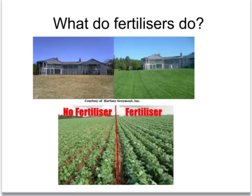You can see from these two pictures the effect of using fertilizer both on a lawn and also on these crops. The fertilizer makes the grass grow much greener and much lusher, and it makes the crops grow much larger. It increases the yield of the crops by providing the essential elements for growth.